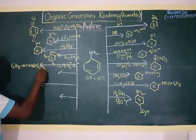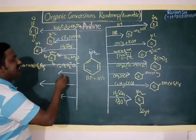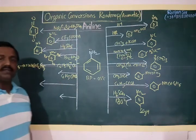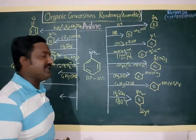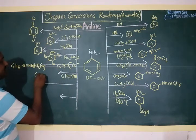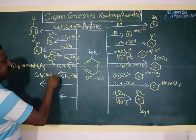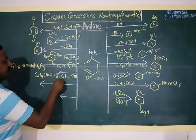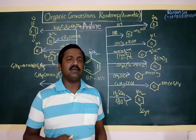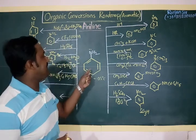The product benzylideneaniline — with formula C6H5–CH=N–C6H5 — is formed from aniline reacting with benzaldehyde. These are the important organic reactions of aniline.